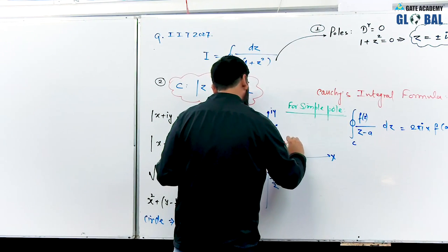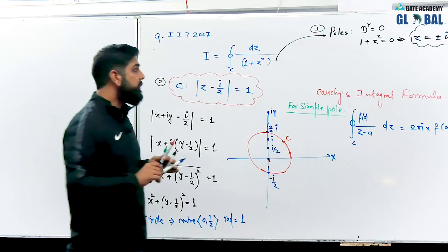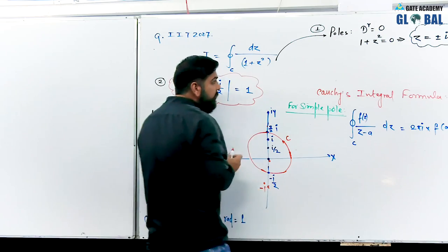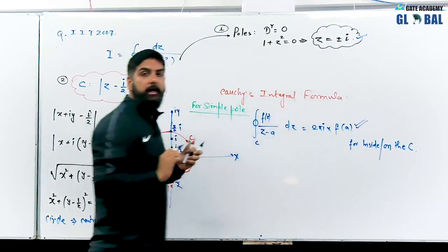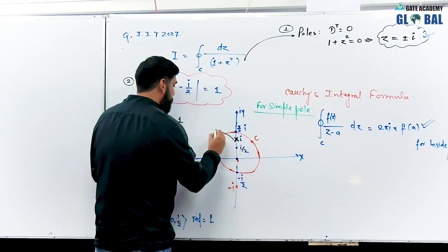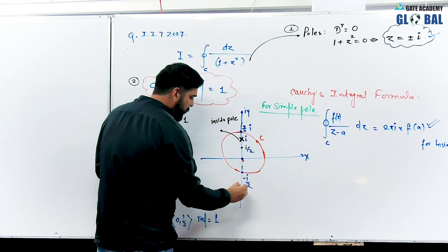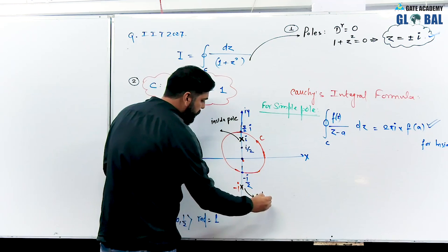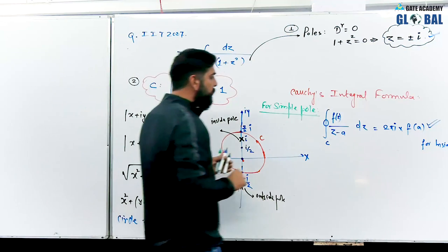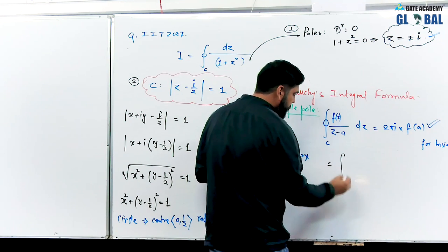This is the closed curve and we can apply Cauchy's integral formula. For the inside pole, we apply directly. I am writing f(z): the denominator 1 plus z square equals z minus i times z plus i. So I can write the integral with z minus i in the denominator and 1 over z plus i as f(z). This matches the form integral of f(z) over z minus a dz.